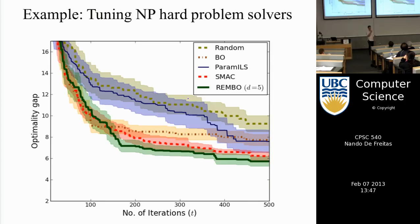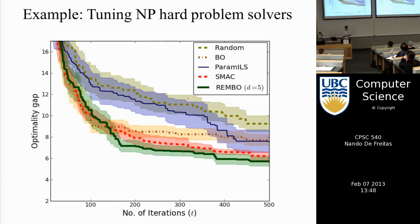The algorithm would try a value of delta and explore to find the best one automatically, as opposed to you having to try a whole range of deltas manually. If each cross-validation involved a billion data points, this would cost you significant time and money.